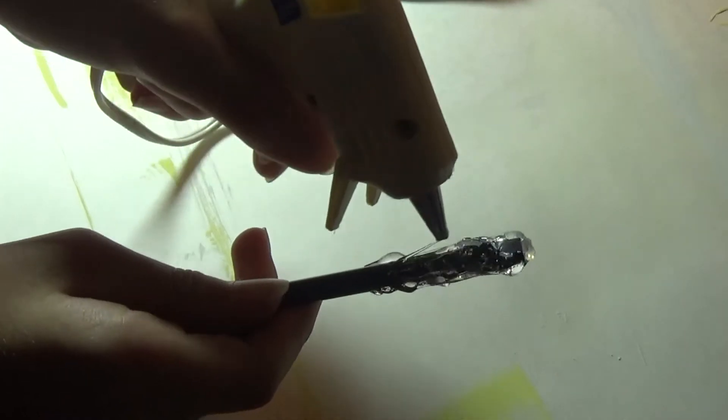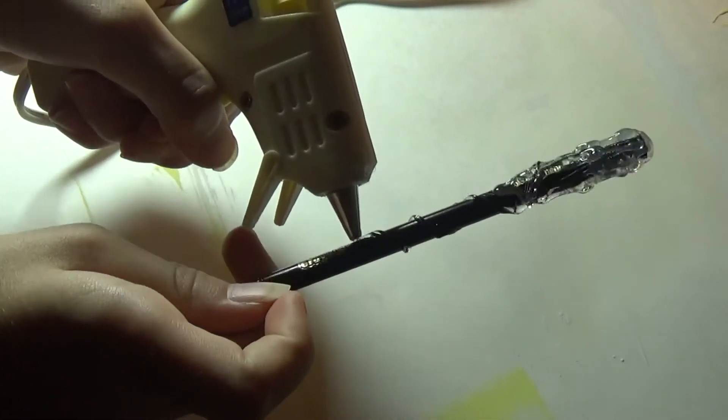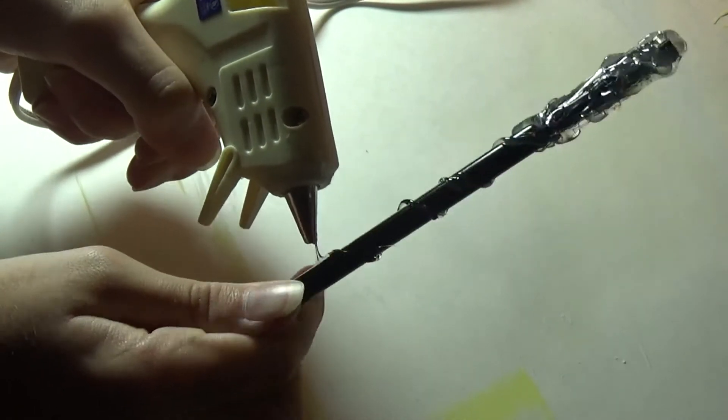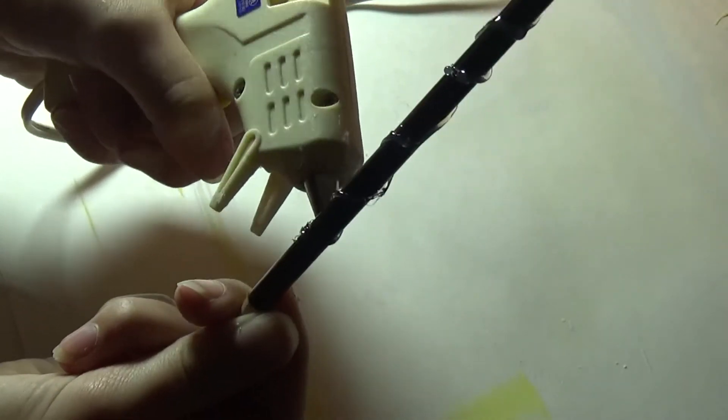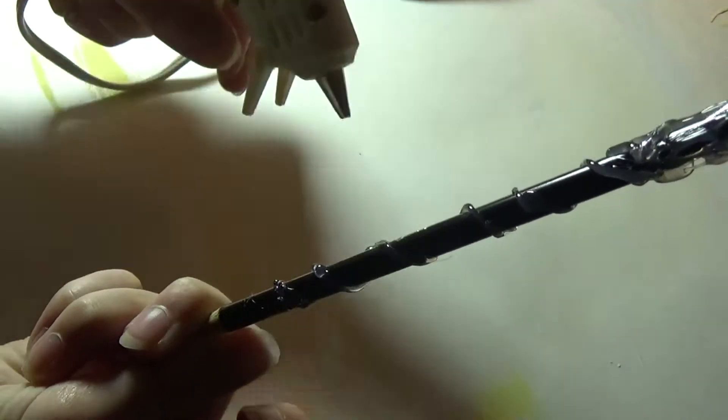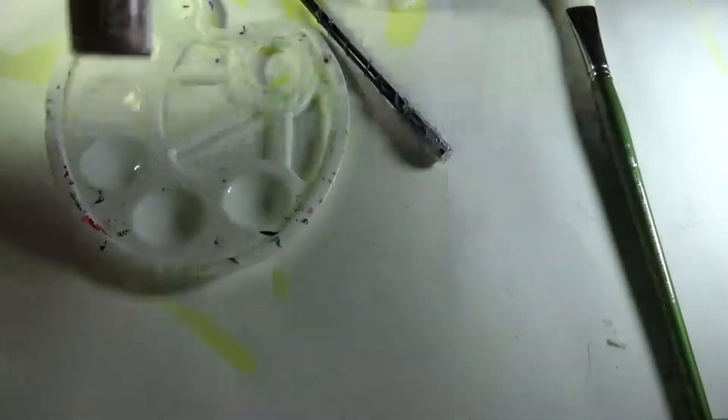Now you want to make sure the hot glue dries before you touch it or you will burn yourself. So if you need a parent to help you then please do that. So I added a little drip effect on the top and then I did little vine effect onto the sides.